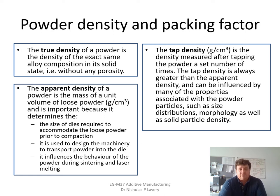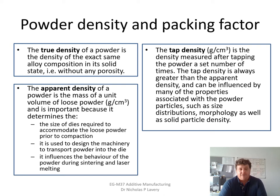The true density of a powder is the density of the exact same alloy composition in its solid state — effectively the density of one single particle assuming homogeneous composition. However, when powder settles, interstitial voids form between particles. The apparent density is therefore the mass of a unit volume of loose powder, and is important because it determines the size of dies required for loose powder prior to compaction in powder metallurgy applications.